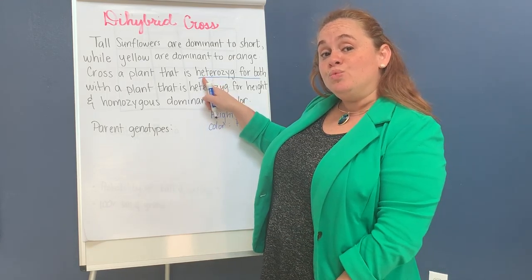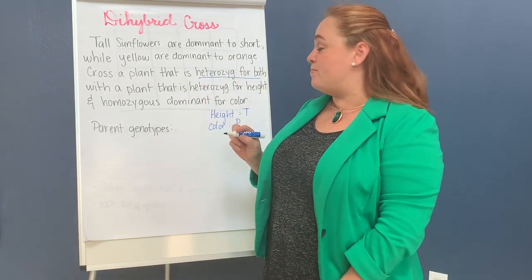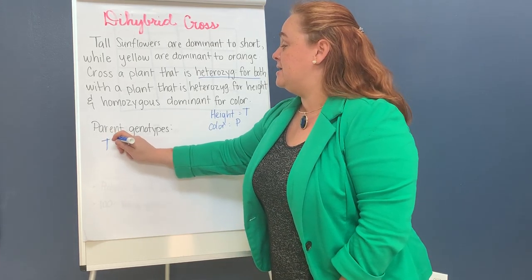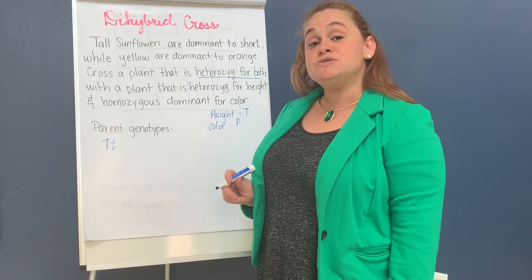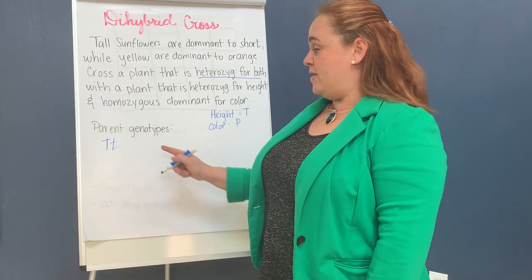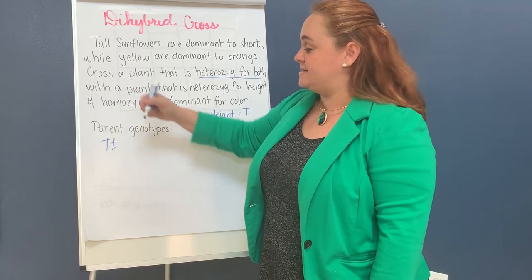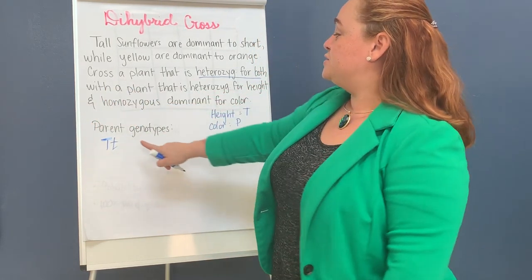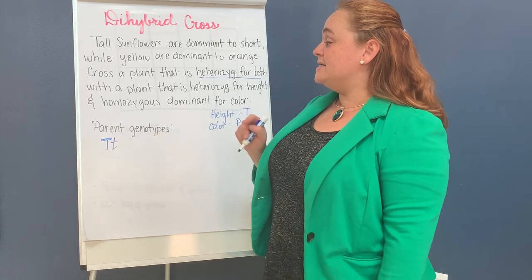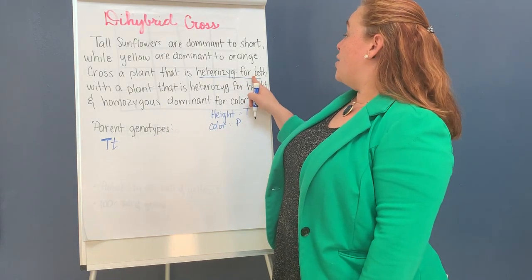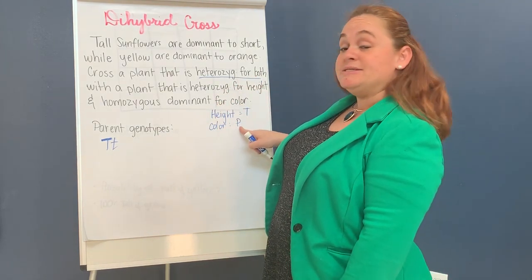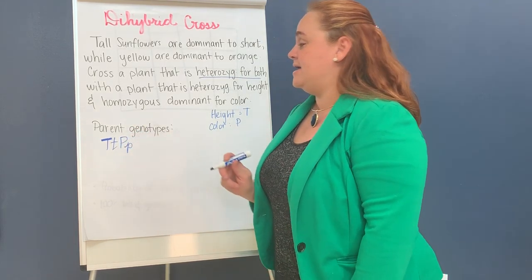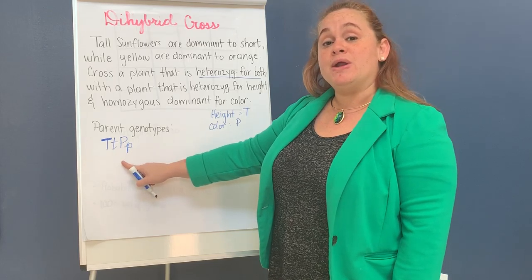Parent one is heterozygous for both traits. Heterozygous means they're not the same — it's the mix. So parent one is capital T with lowercase t for the first trait, and capital P with lowercase p for the second trait.